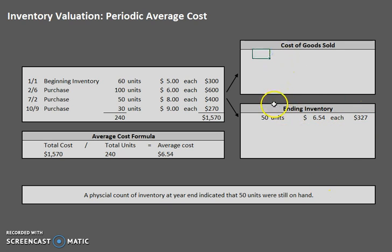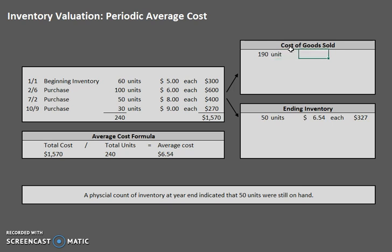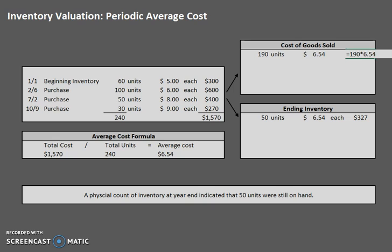Now we're going to do the same thing for cost of goods sold, but we have to do a little math. If we had 240 units available for sale and only 50 units are on hand at the end of the period, how many units did we sell? 240 available for sale minus the 50 that we still have gives us 190 sold units. The average cost isn't going to change whether for sold units or ending inventory — it's still $6.54. So 190 units at $6.54 each gives us $1,243.